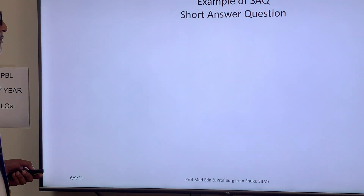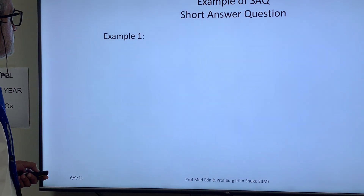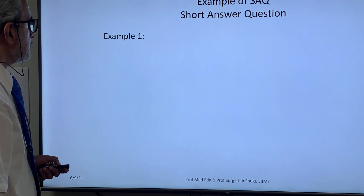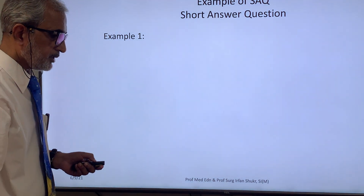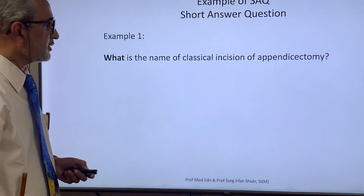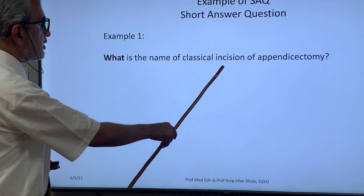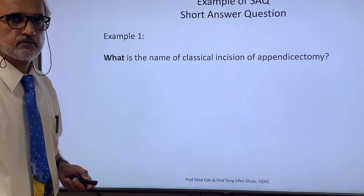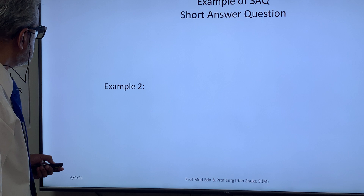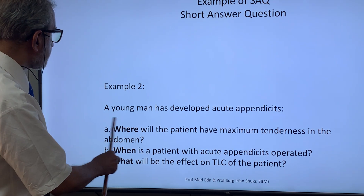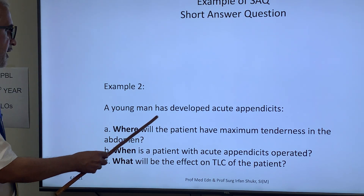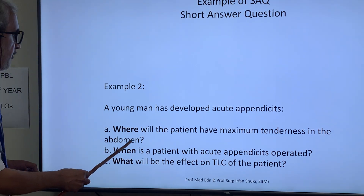Let me give you an example of how a short answer question can be written in two ways. First, in the form of a single question — for example: 'What is the name of the sign used in the diagnosis of appendicitis?' Second, in the form of a statement followed by questions — for example: 'A young man has developed acute appendicitis.'